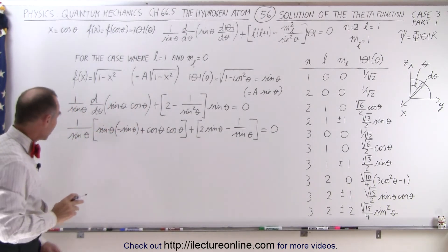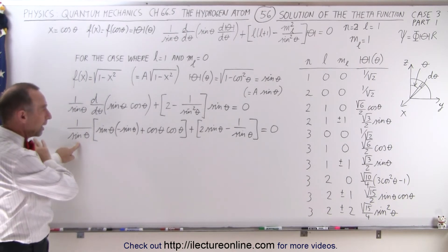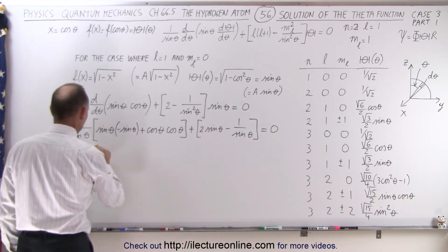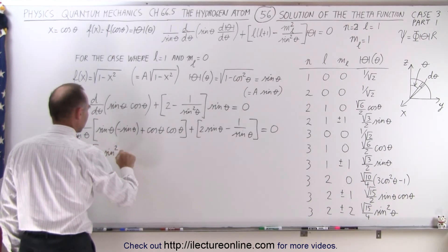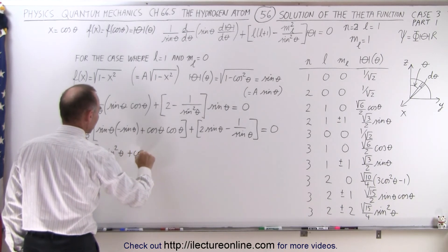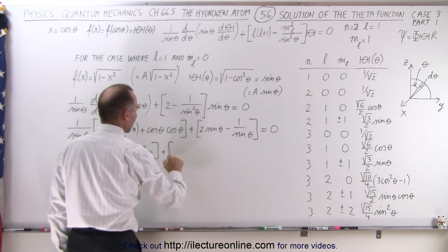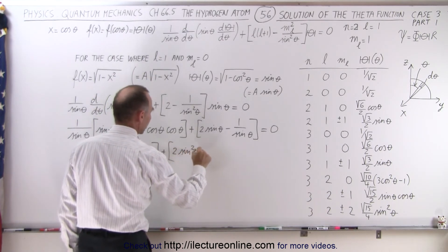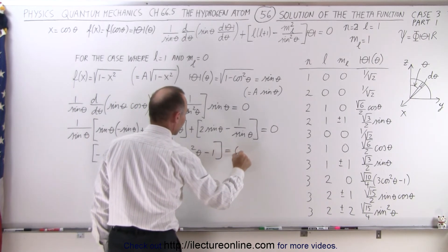To get rid of the 1 over sine of theta, we multiply both sides of the equation by sine of theta. That clears the denominator, so this becomes minus sine squared of theta, plus cosine squared of theta, plus 2 times sine squared of theta, and minus 1, and that should equal 0.